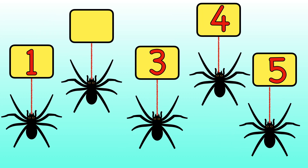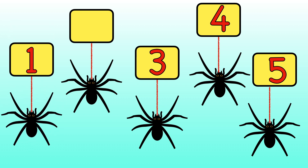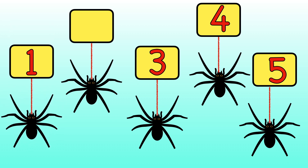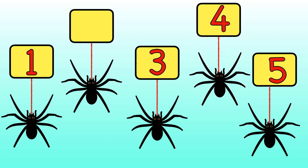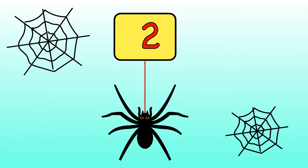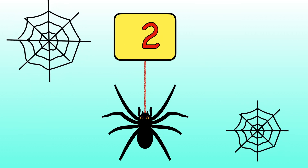Can you tell me the missing number this time? Show me with your fingers. One, two, three, four, five. The missing number is two.